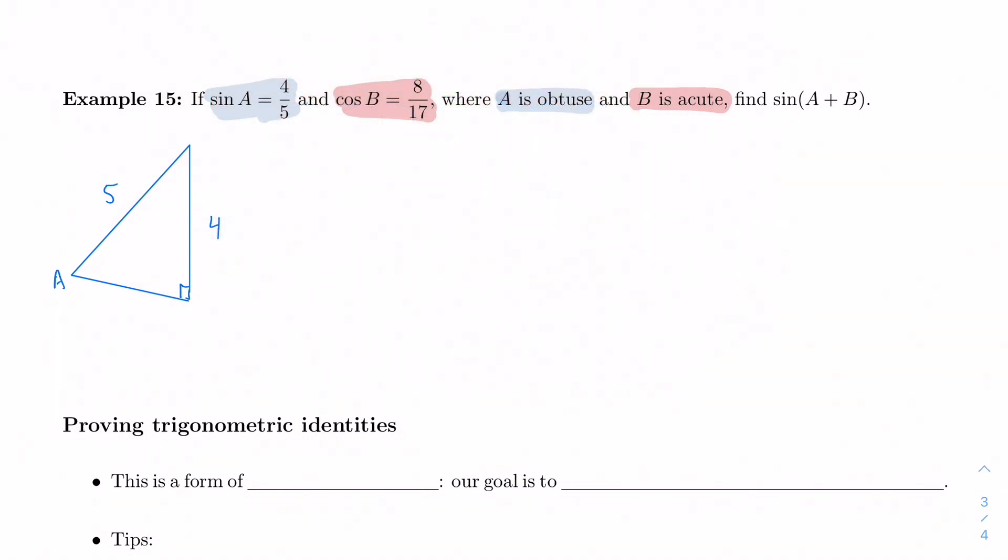Cosine B is 8 over 17. So again, let me just draw this out real quick. It doesn't have to be perfect. It's not even close to being a right triangle, but that's okay for now. And its adjacent side is 8 and hypotenuse is 17, where A is obtuse and B is acute.